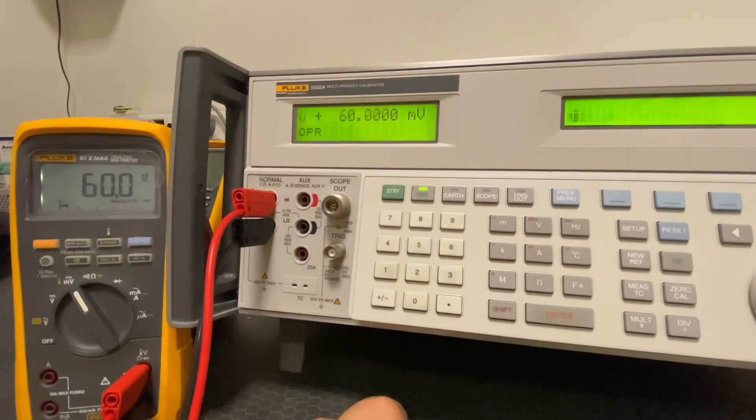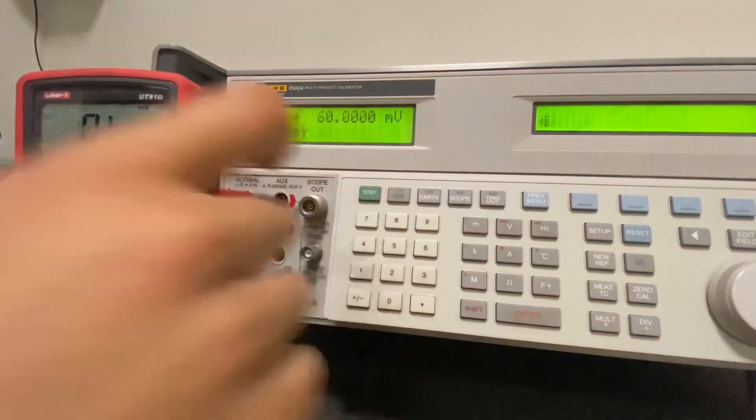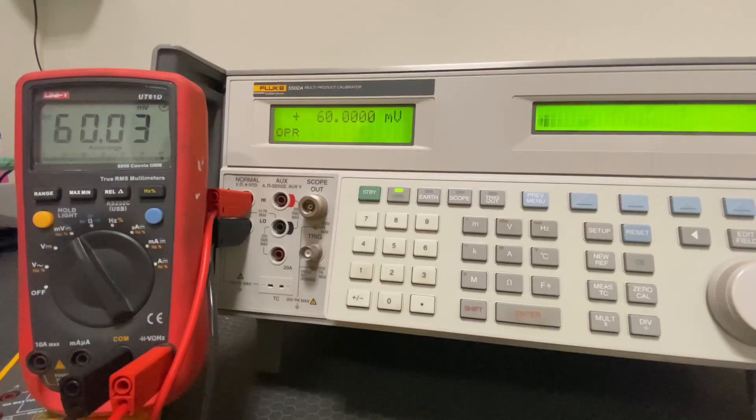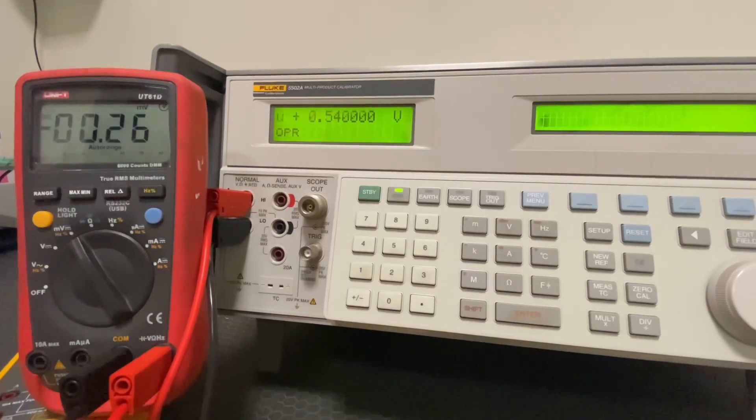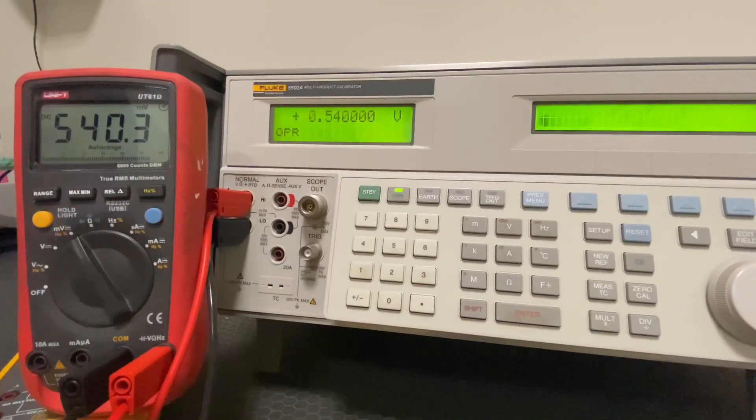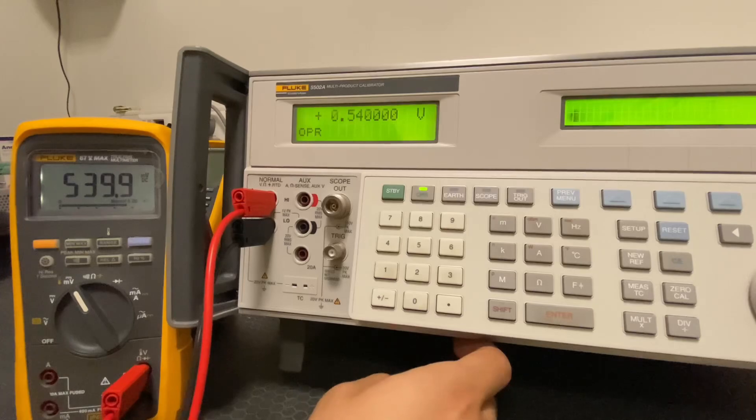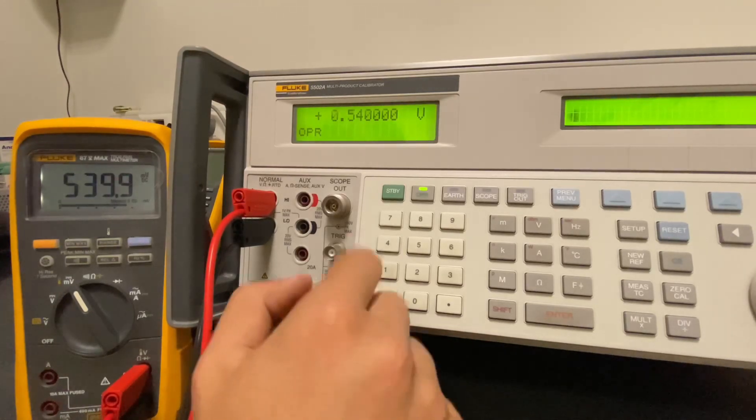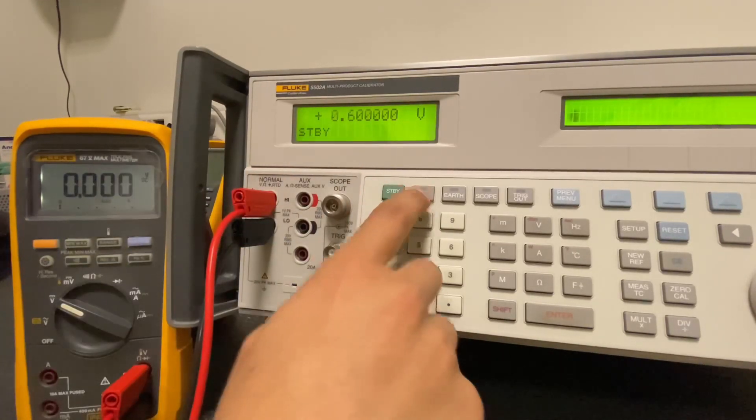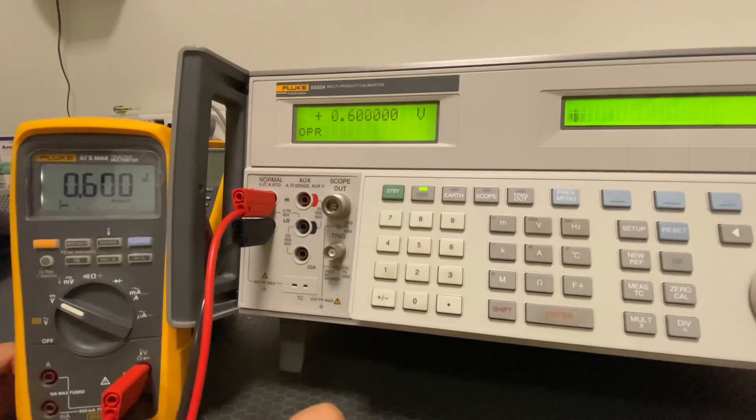Now let's check 540 millivolts on both multimeters. There is an 8 volt price difference, but for now the results are similar. Now I will take the millivolt values closest to the minimum to make a comparison.